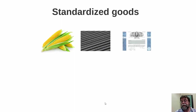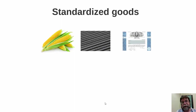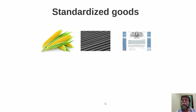Stocks and other financial instruments are also standardized. If you buy a share of AT&T stock or any other stock, one share of common stock is equivalent to any other share of common stock. From the holder's standpoint, it doesn't matter which particular shares they hold.